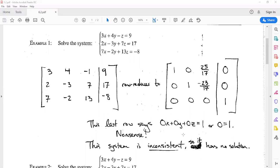It really says 0x plus 0y plus 0z equals 1. But that really just says 0 equals 1, which we know is nonsense. So this is an example of a system of equations that we call inconsistent—it has no solution. It's inconsistent because when you do your Gauss-Jordan elimination, you get this one row that really tells you some nonsense.